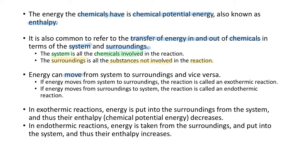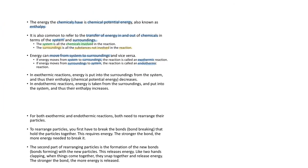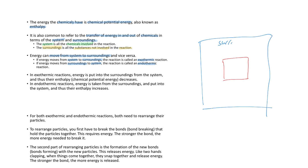Energy can move from system to surroundings and vice versa. If energy moves from system to the surroundings, the reaction is called an exothermic reaction. If energy moves from surroundings to system, it's called an endothermic reaction. Generally, we draw the system within the surroundings — if energy transfers out of the system into the surroundings, that's exothermic; if energy goes from the surroundings into the system, that's endothermic.